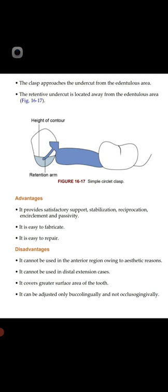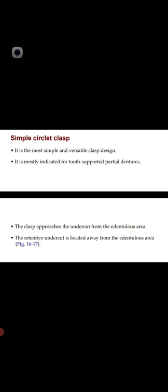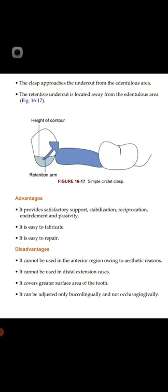Disadvantages of the simple circulate clasp: it cannot be used in the anterior region due to aesthetic reasons. It cannot be used in distal extension cases, as it is only indicated for tooth-supported partial dentures. It covers a greater surface area of the tooth, increasing risk of decalcification. It can be adjusted only buccolingually and not occlusogingivally.